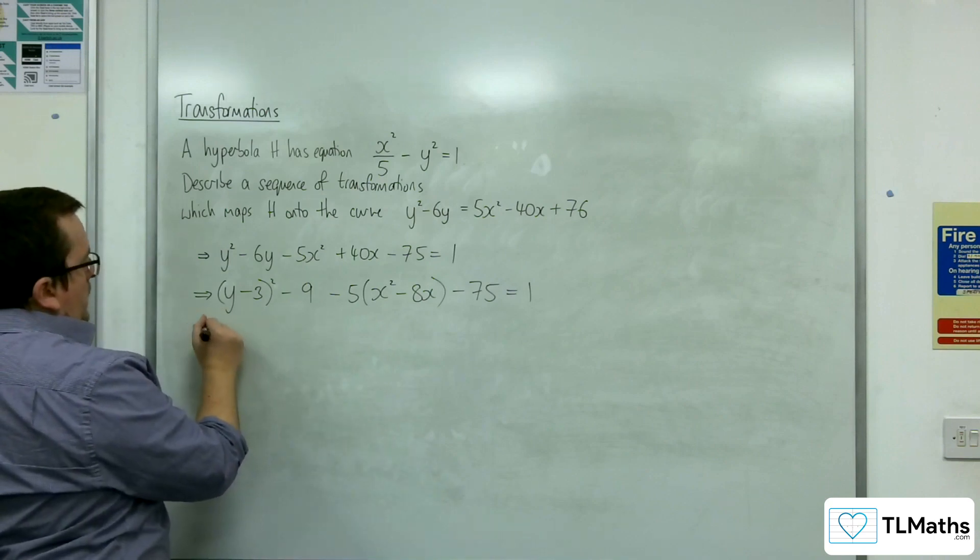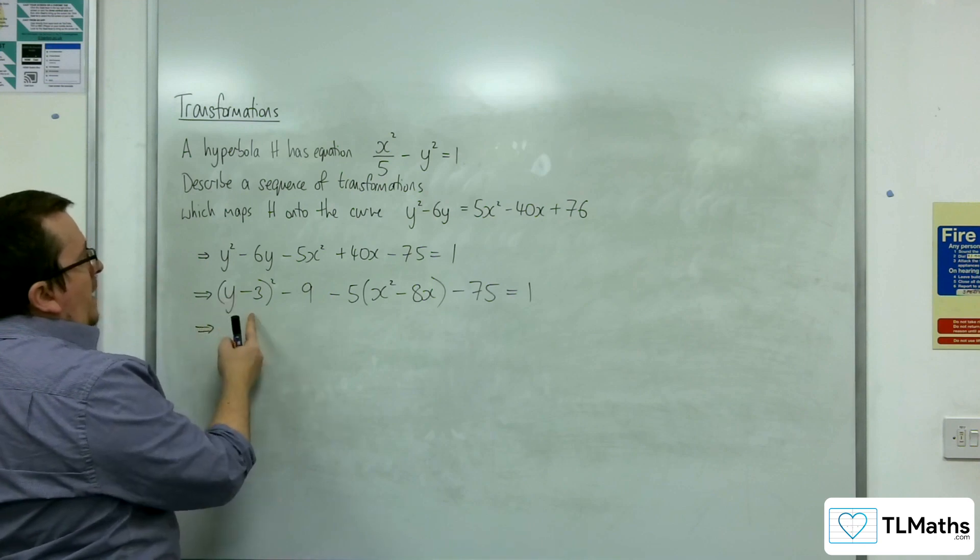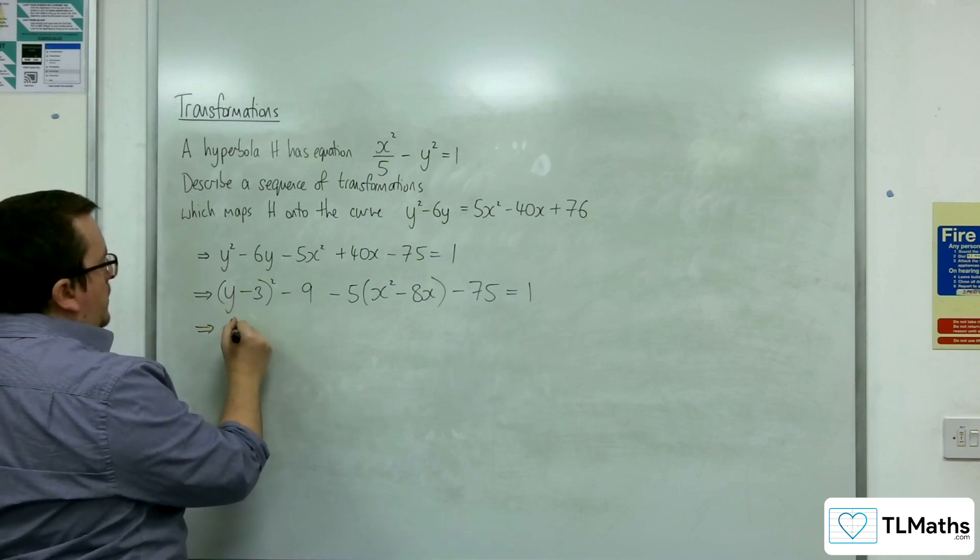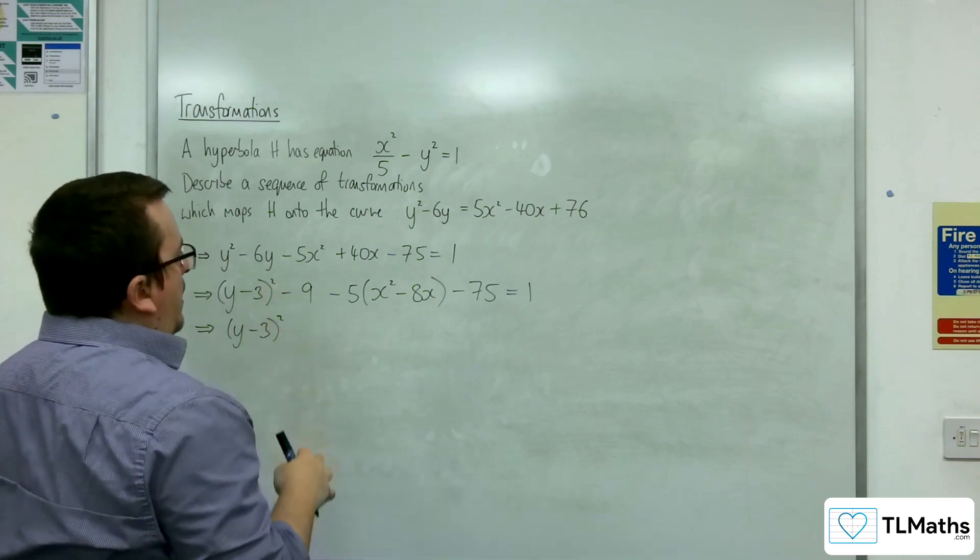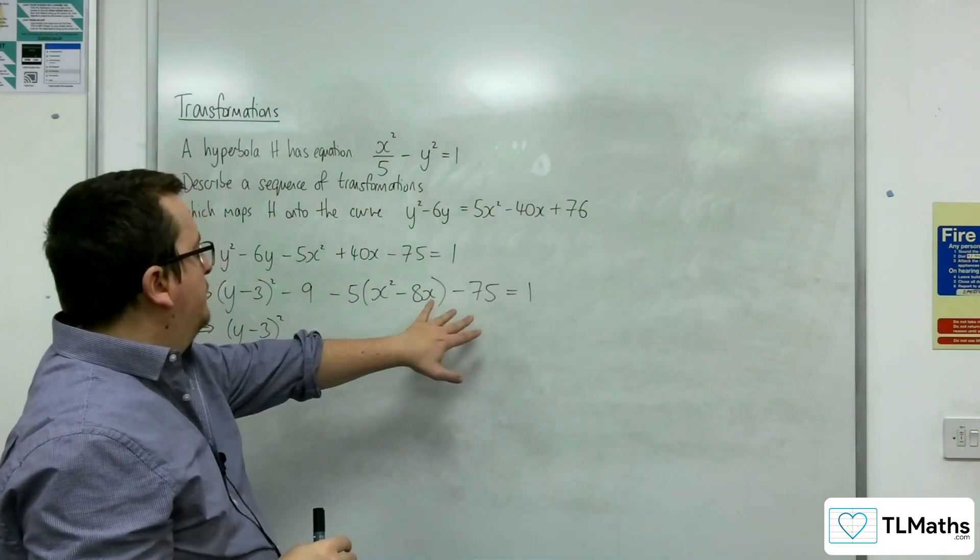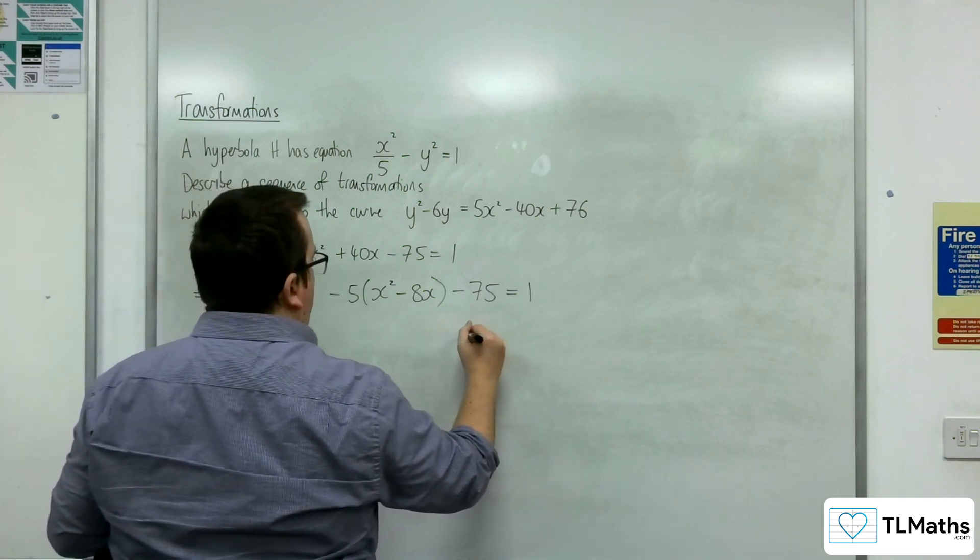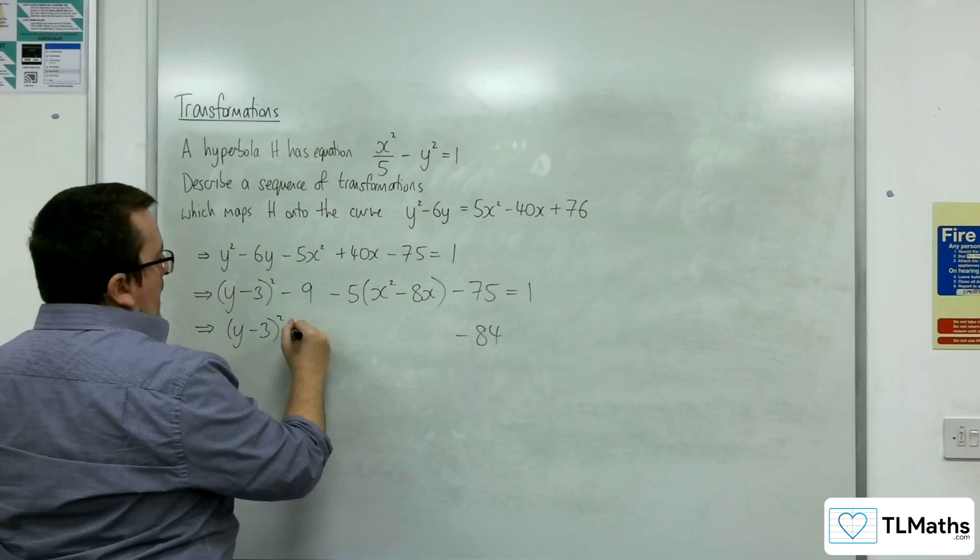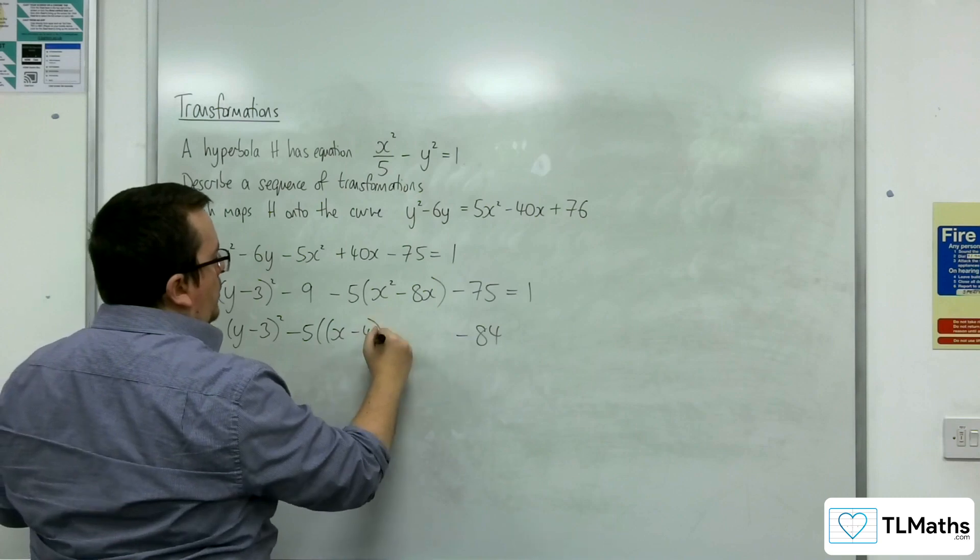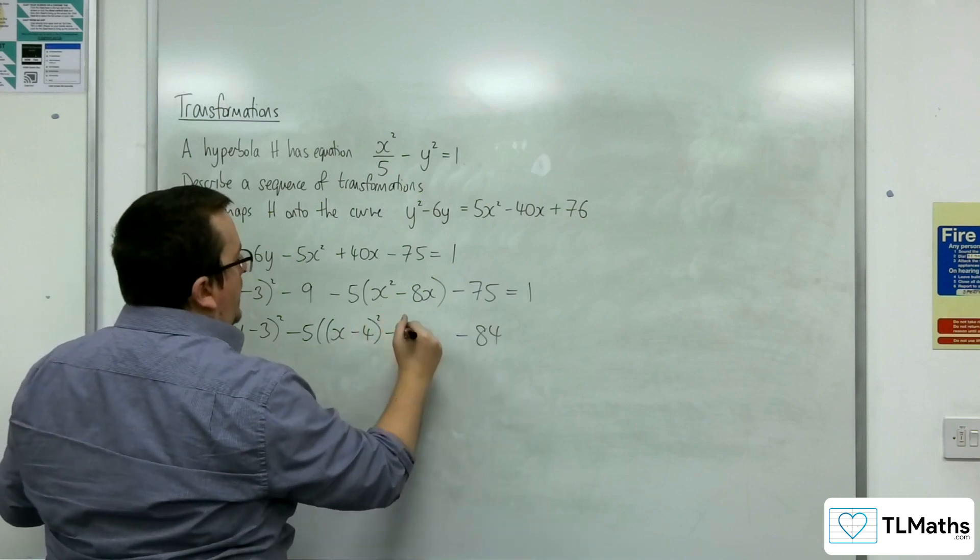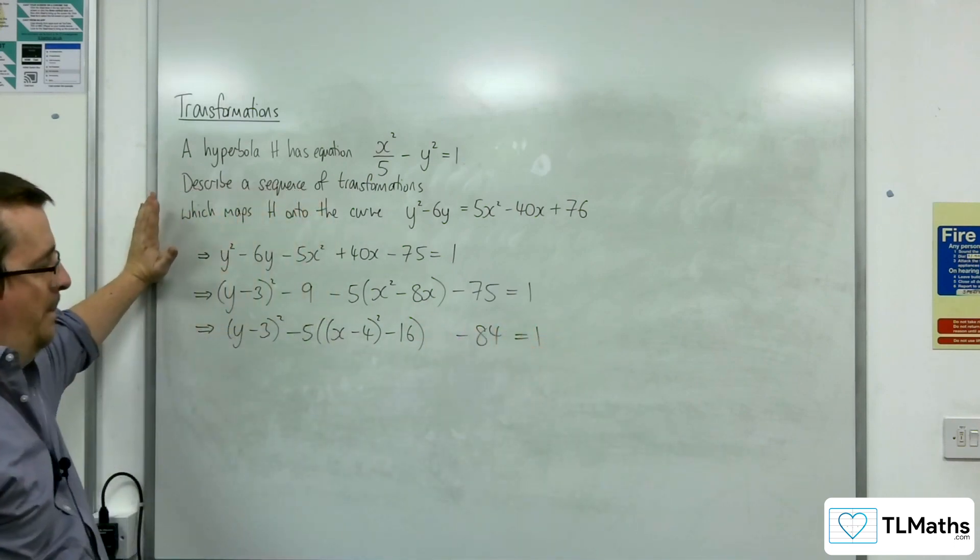So I'm going to leave this bit alone for the moment. Then I've got this minus 9 and the minus 75, which is going to make minus 84. So I'll pop that at the end. Here I've got minus 5 and I'm going to complete the square on the inside, which is x take away 4 squared, take away the 16. And we've still got the equals 1 on the right-hand side.